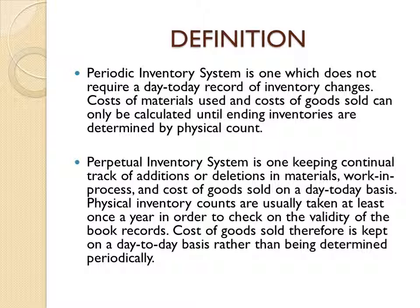In the perpetual inventory system, entries and exits of stock are recorded directly in the stock account. This is different from periodic stock taking, where purchases of stock and materials are recorded as expenses, and it is only at the end — during the physical stock taking — that the amount of stock is known and recorded under the stock account. With a perpetual inventory system, stock entries and exits go directly into the stock account and are not considered as expenses.